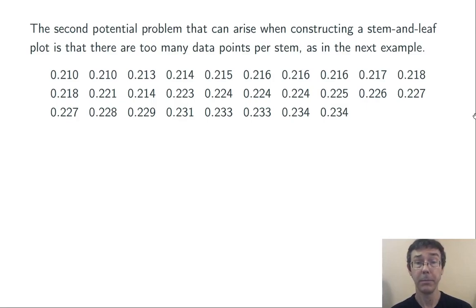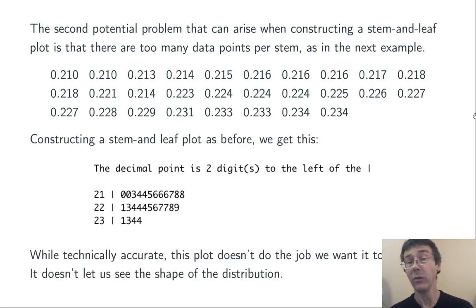The second potential problem that can arise when constructing a stem and leaf plot is that there are too many data points per stem, like this example. So the natural thing to do is to use the thousandths place for our leaves, and the tenths and the hundredths for our stems. Unfortunately, if we do that, we only get three stems: 21, 22, and 23.